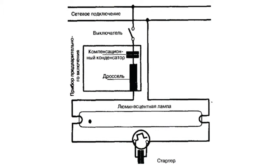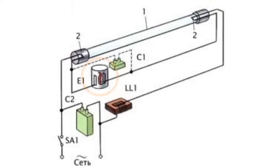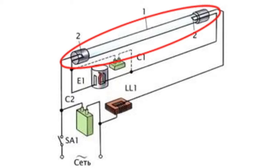During the closing of the switch, the hardly noticeable smoldering charge appears within the starter, causing the electrodes in the starter to heat. One of the electrodes is bimetallic; when heating, it bends and touches the other electrode. As a result, the current within the circuit increases significantly, whereas the starter charge dies out.